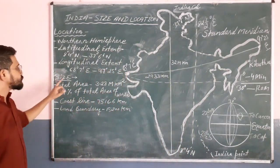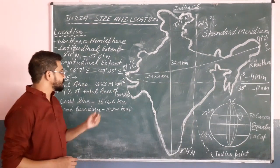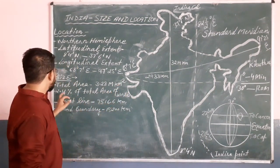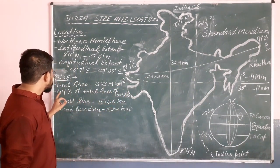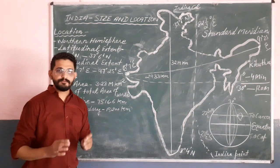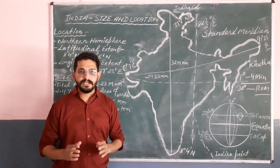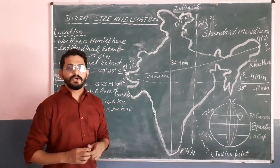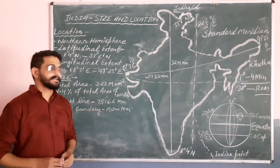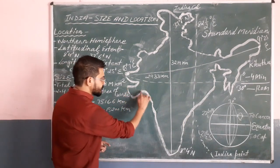Now we have the size and area of India. The total area of India is 3.28 million square kilometers, and this is 2.4 percent of the total area of the world. The entire world is approximately 510 million square kilometers. So India's area is 2.4 percent of the total world area.